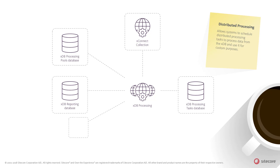Custom logic runs on all XDB processing roles and processes the entities for the purpose of the receiving system. During the processing, the custom processing logic can continually send the processed data for storage or handling in other systems. For example, the specific aggregated data for the path analyzer is stored in separate tables in the XDB reporting database.